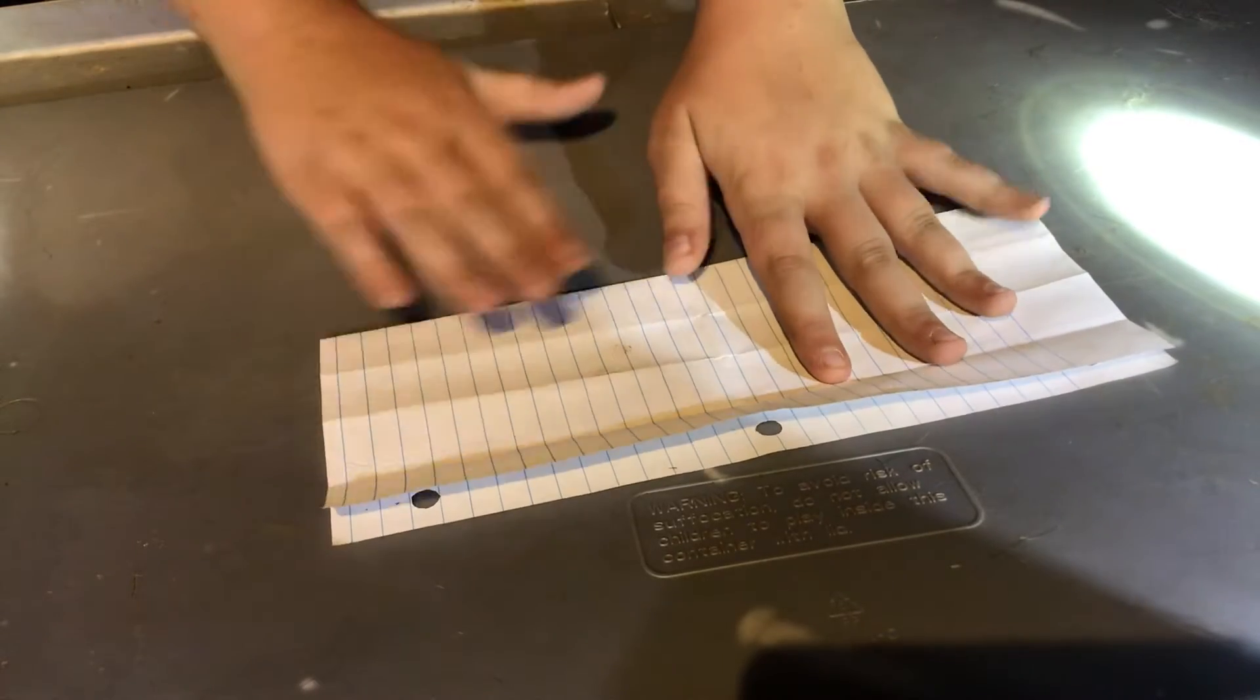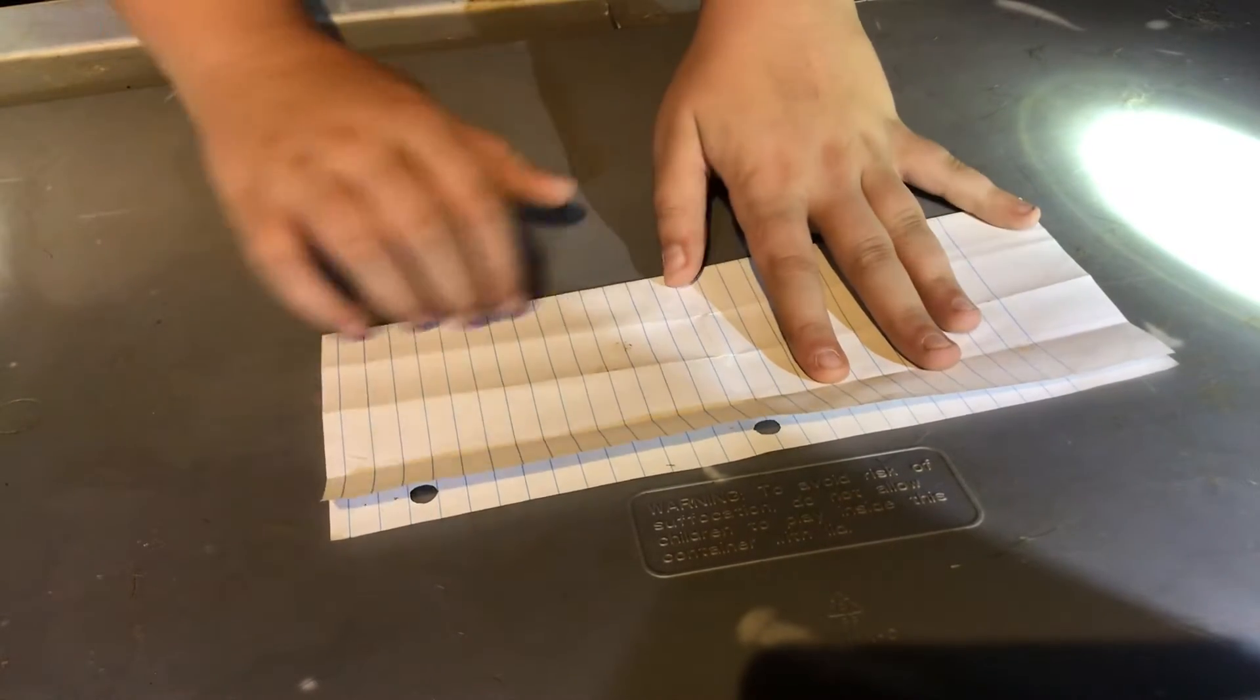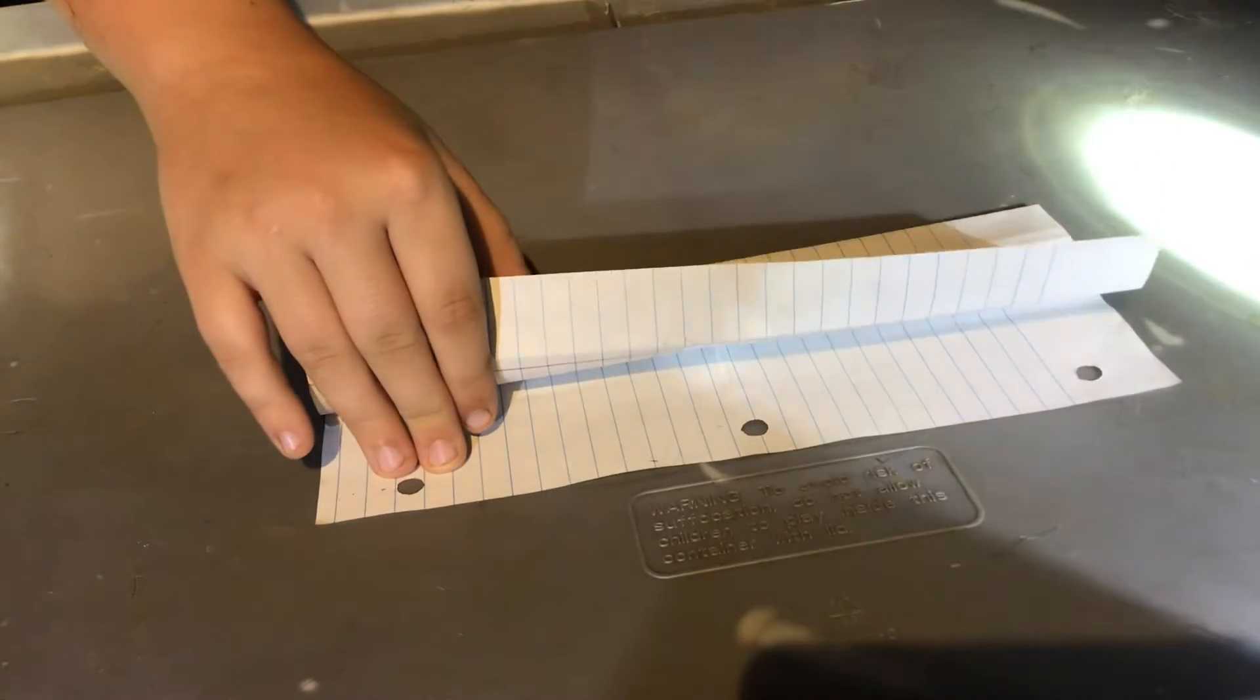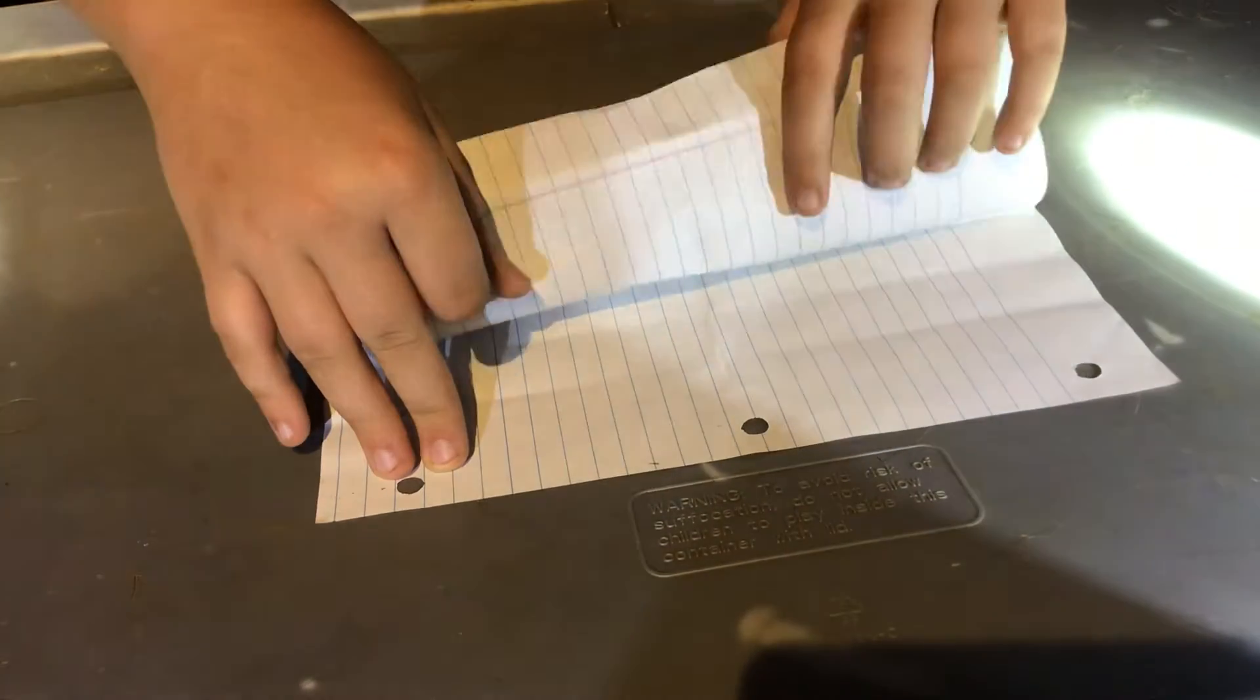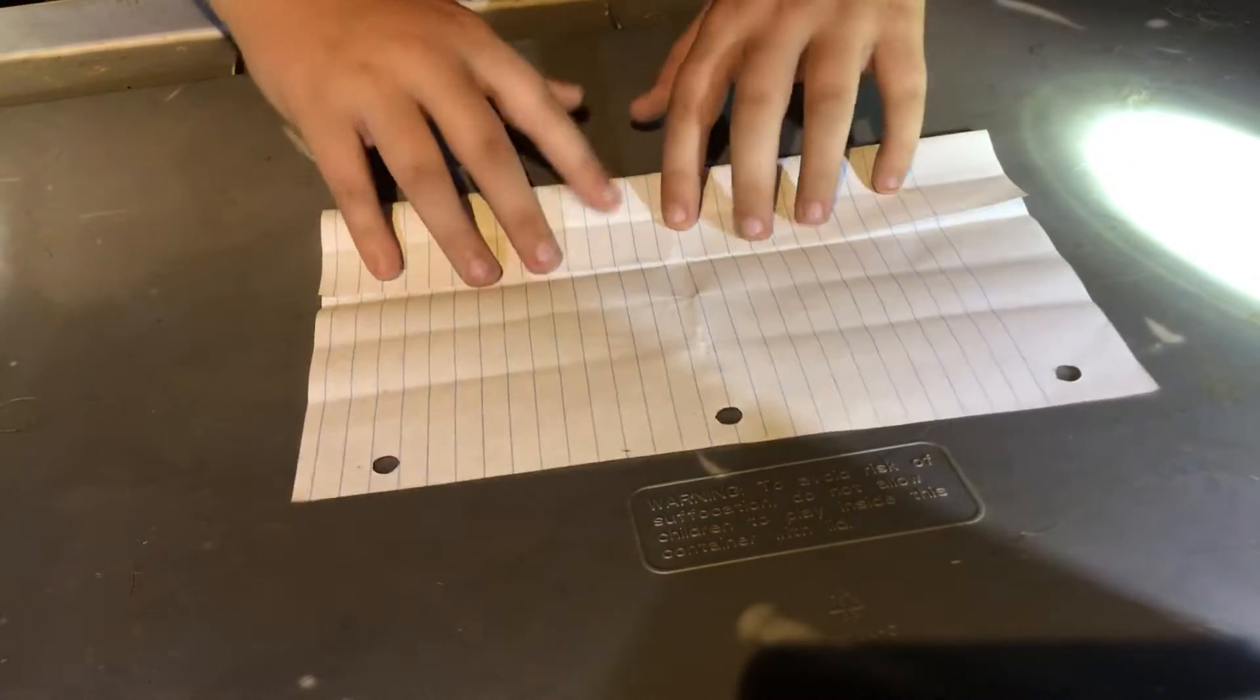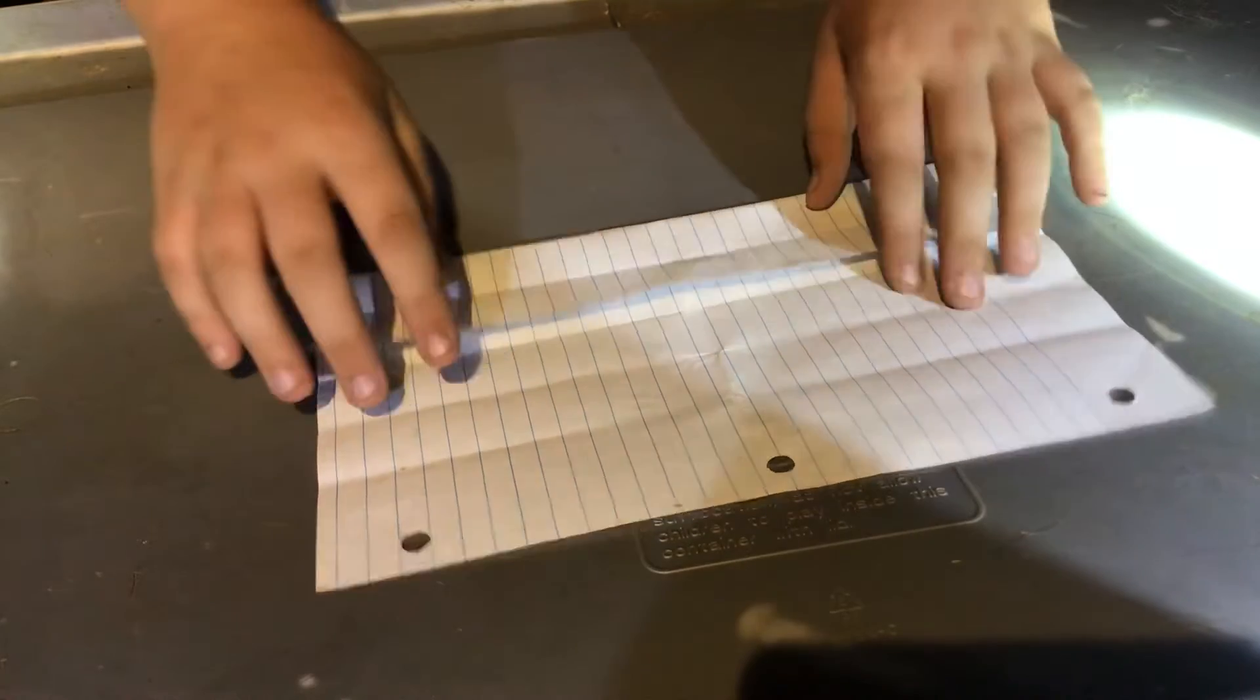What you're going to want to do is have it creased just a little bit, but not too much. Then you're going to want to unfold it, then fold down to that center line as you can see right here.